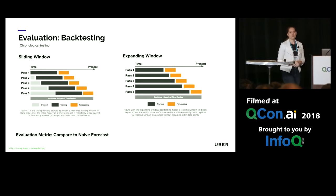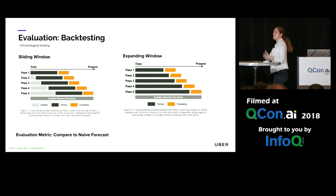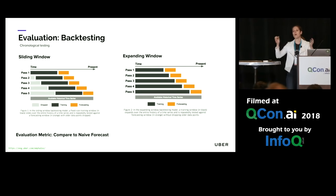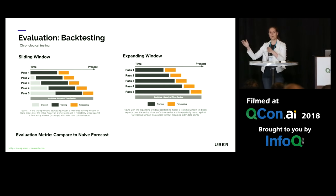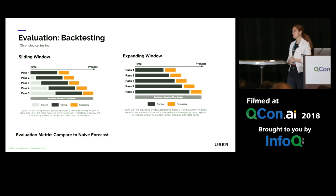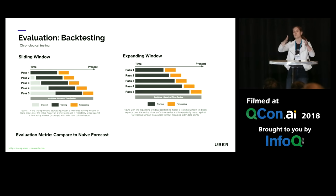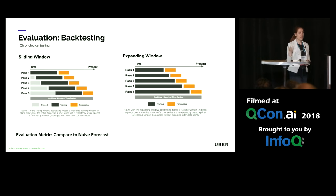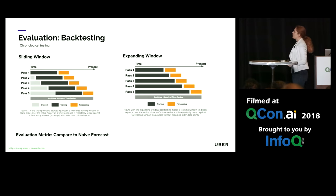There are two major approaches: the sliding window approach and the expanding window approach. In the sliding window approach, you take a fixed window of training data — shown in black — that you move forward at every single pass, then test on the orange data. For the expanding window approach, which is particularly useful if you have very little data available, you expand the training data from pass to pass without dropping any data points, and again you test on a fixed orange window.